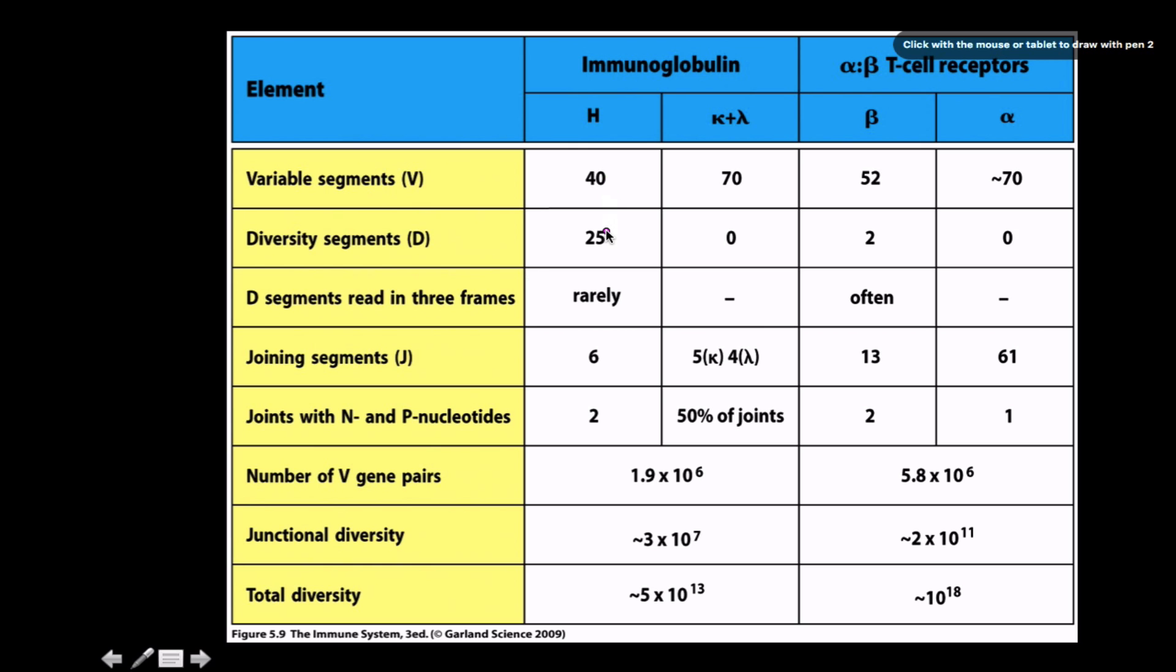Let's look at the overall comparison between them. Variable segments - a lot more in the alpha and beta T-cell receptors than in immunoglobulins. Diversity segments in the heavy chain, there's a little bit more than in the beta.